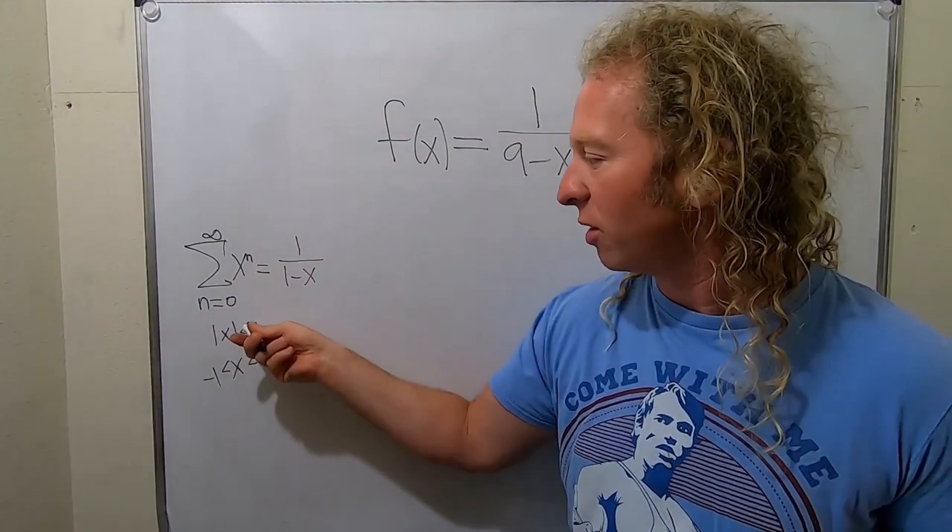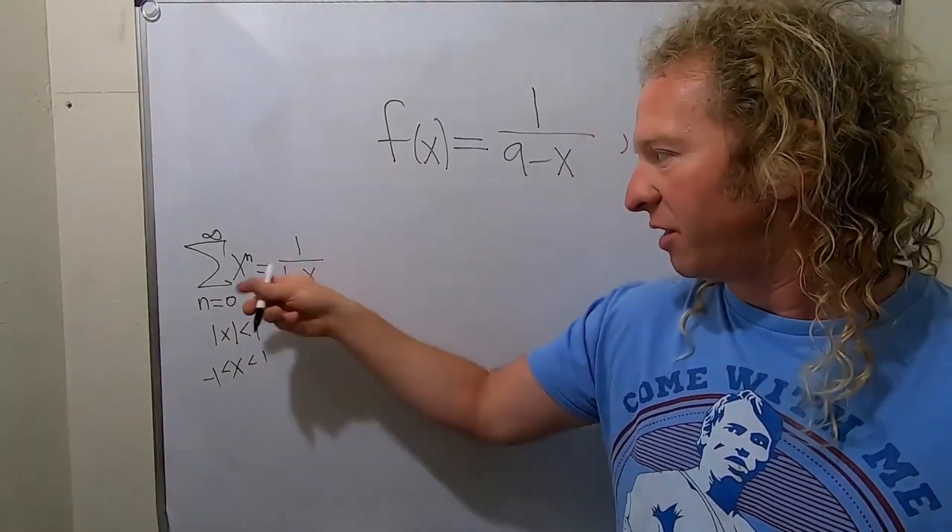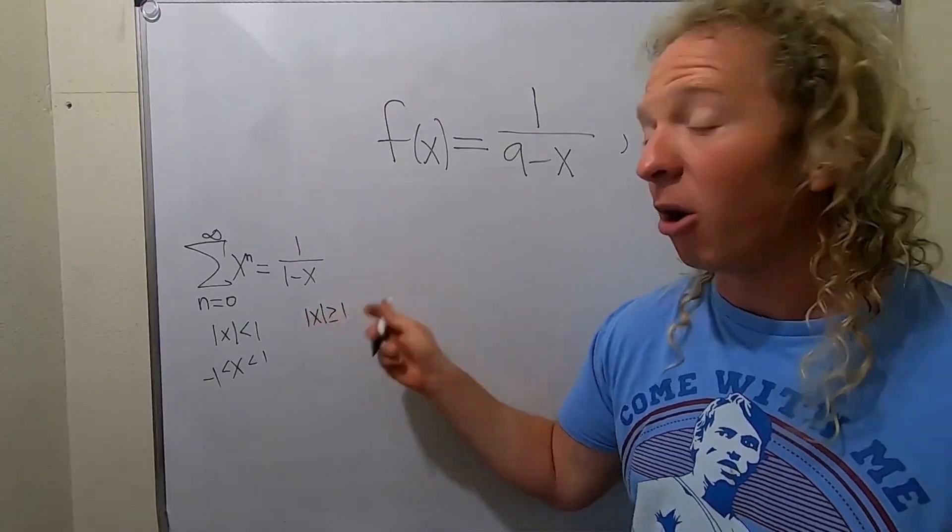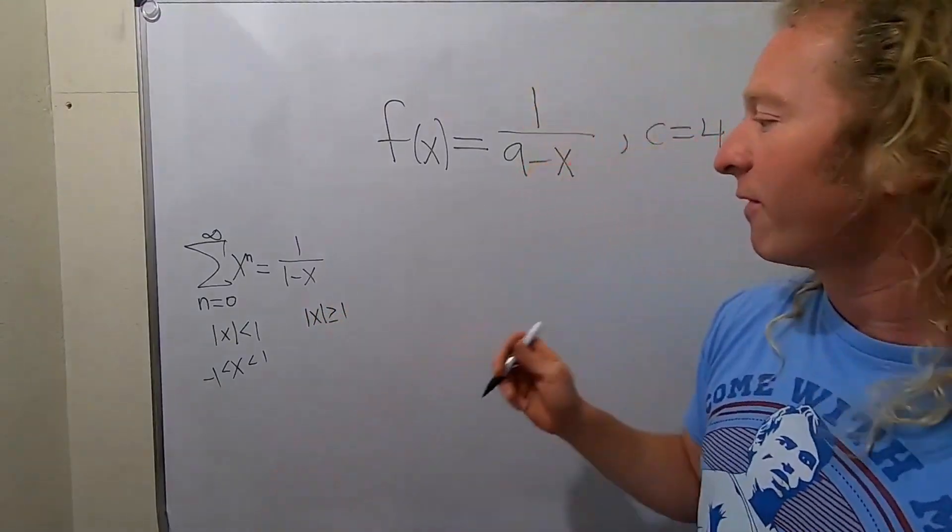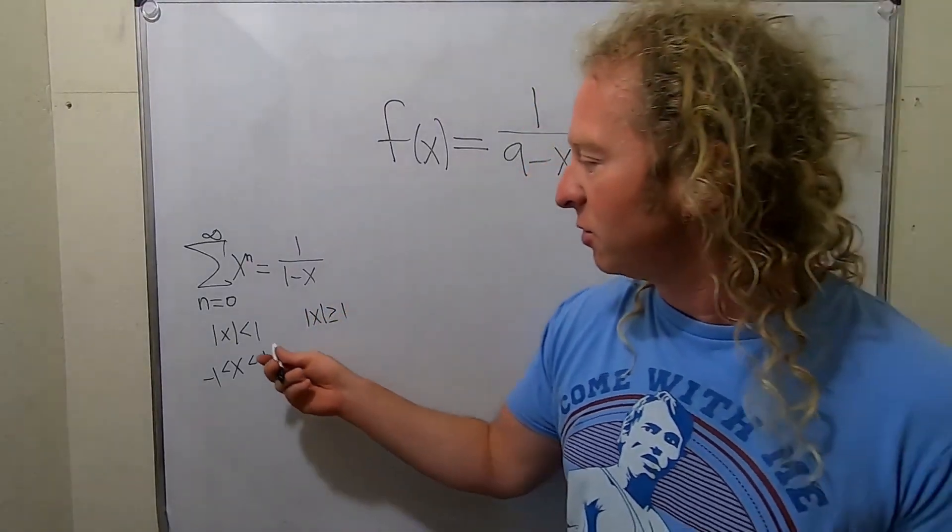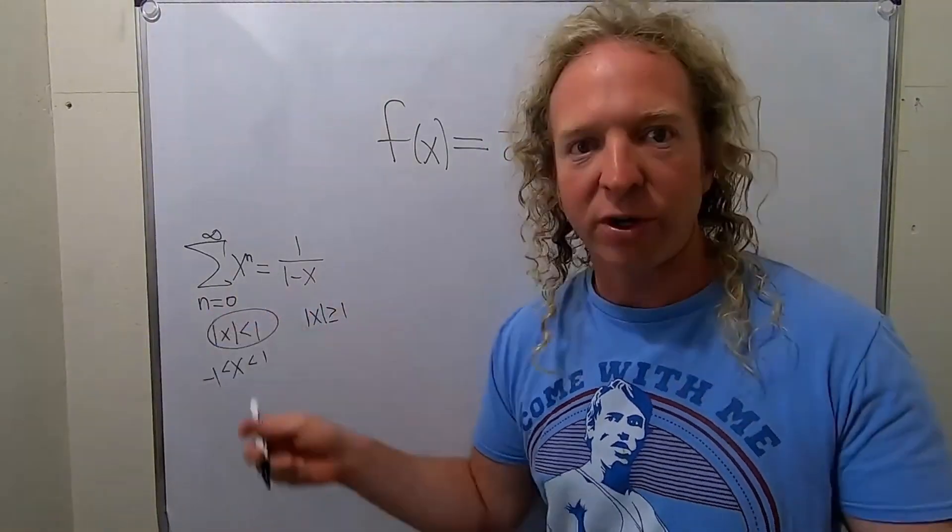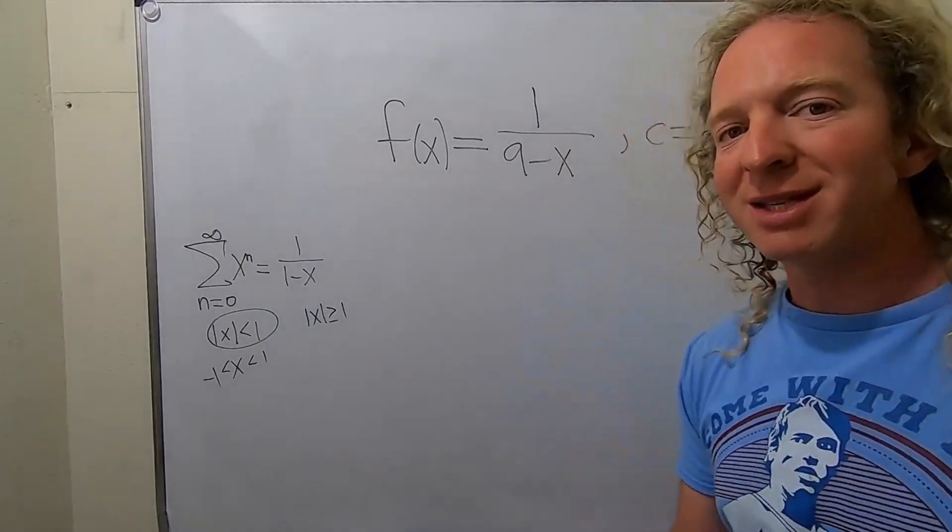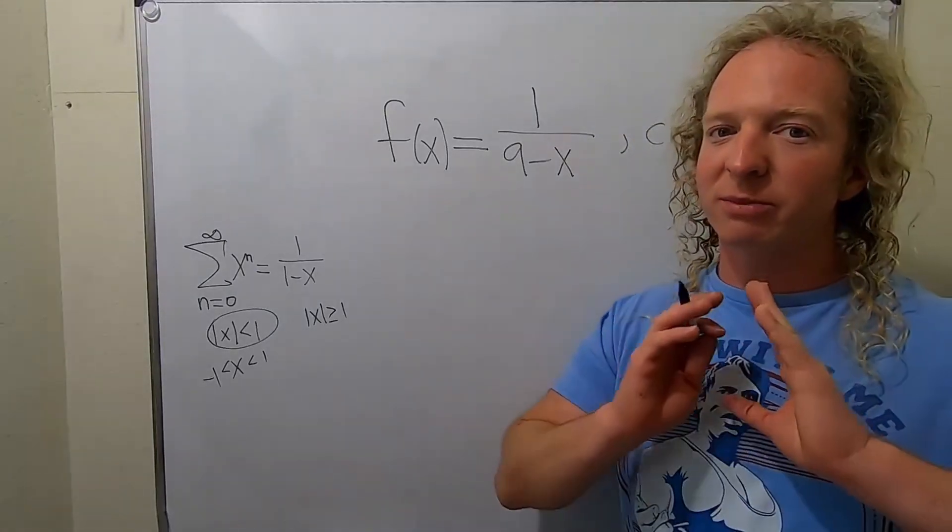This will not be true if this is not true. In other words, this series will diverge if this is the case. Always, every single time. So when we're finding the interval of convergence, all we have to do is just use this formula and we're good. So let's go ahead and go through this problem very carefully. It's not hard, but it does require some skill.